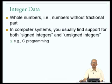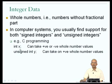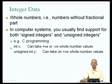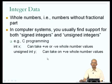Those of you who have programmed in C may have come across this concept. The idea is that I could declare a variable called x to be an integer, or declare a variable called y to be an unsigned integer — as in the declarations int x and unsigned int y. The idea is that if x may take on both positive and negative whole number values, I would declare it as an int or signed int. Whereas if y never takes on negative values, I could declare it as an unsigned int.